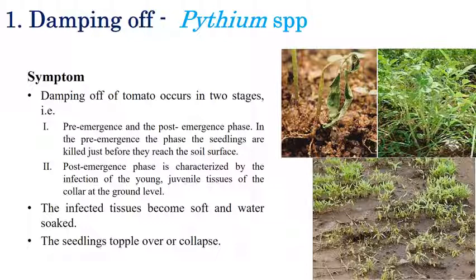The first disease is damping off, mostly caused by Pythium species. In tomato nurseries, two types of damping off can be observed: pre-emergence damping off and post-emergence damping off. In pre-emergence damping off, seedlings are killed in the soil before they emerge.